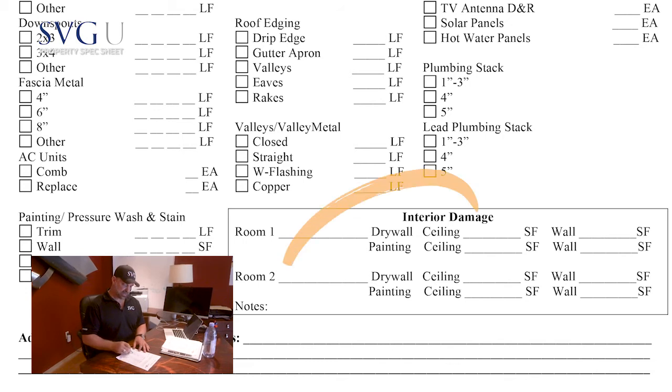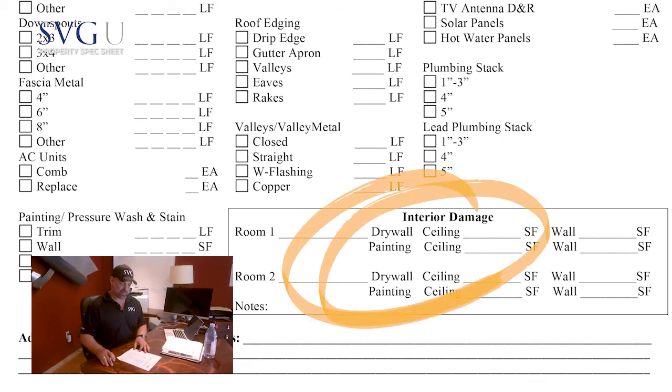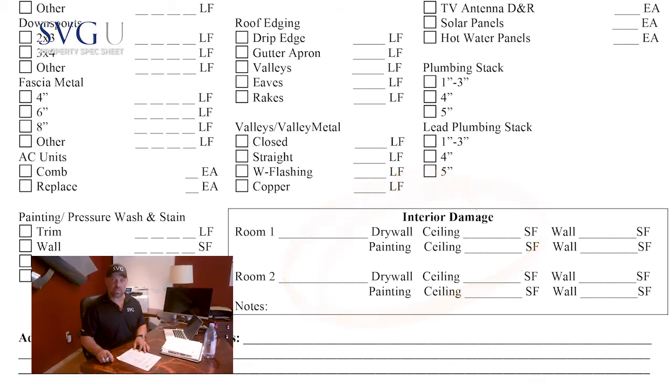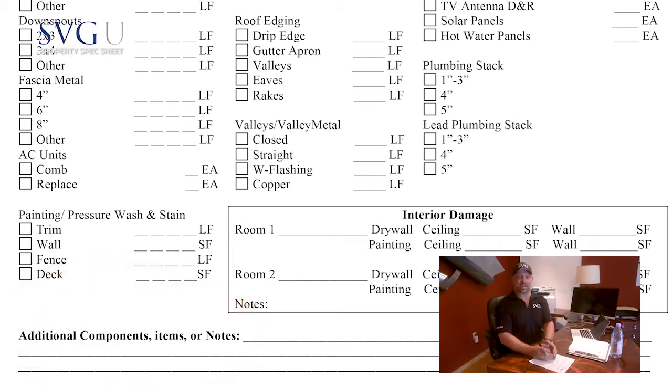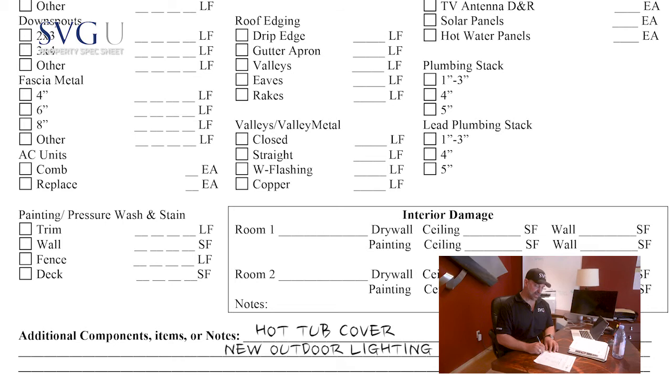There's an interior section here so we can work through the inside of the property by room and mark down where we have paint and drywall damage. The last section — additional components, items, or notes — is for anything else not on this piece of paper that you need to write about the property. For example, when we do the walk around today, we're going to have things like hot tub covers, solar-powered copper lanterns outside, and electrical issues with outdoor lighting. That's a great area to write those things down so we can estimate them later on.